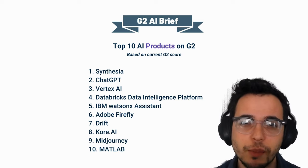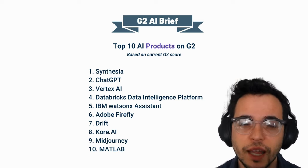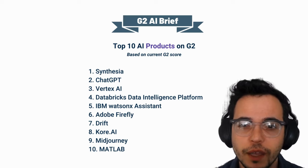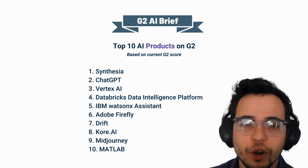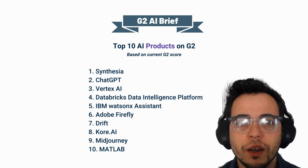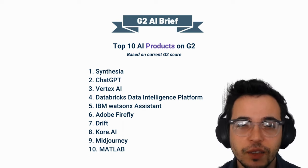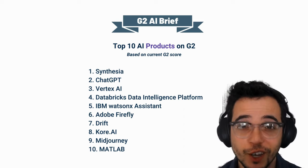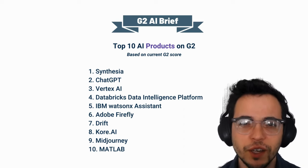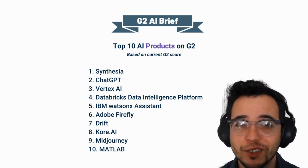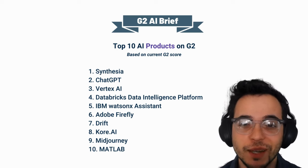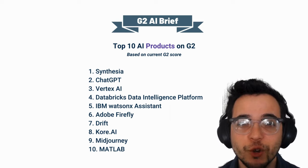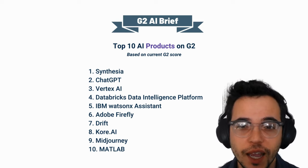There's actually a mix of different types of solutions that have been popular this past month based on their top G2 score. One of the top products is Synthesia — a tool allowing for the creation of AI videos and avatars for all sorts of different use cases. ChatGPT is number two. Vertex AI is Google's solution which allows developers and others to create AI solutions.